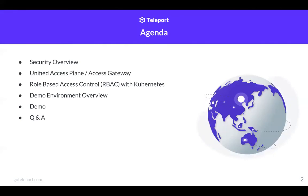Here's the agenda for today's webinar. I'll first start with a high-level overview of security, discussing attack surfaces, security architecture, zero-trust concepts, and tying those into how you might approach securing Kubernetes workloads. I'll then move into speaking about using a unified access plane or an access gateway for accessing infrastructure. I'll then discuss native RBAC capabilities within Kubernetes, followed by an overview of my demo environment and an actual demo. Finally, I'll answer any questions added to the Q&A chat.